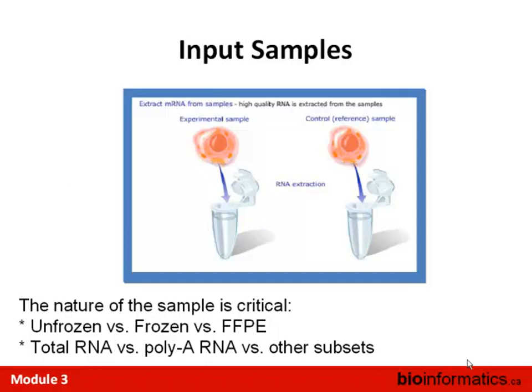Another thing that critically determines how an experiment works is the nature of the sample. You could have a sample that has never been frozen, coming directly from a cell culture line or animal tissue, get RNA extracted, and then be hybridized onto a microarray. That's good, because the process of freezing down tissue or RNA can damage or degrade it, and you'll see a definite quality difference between never-frozen and frozen samples.